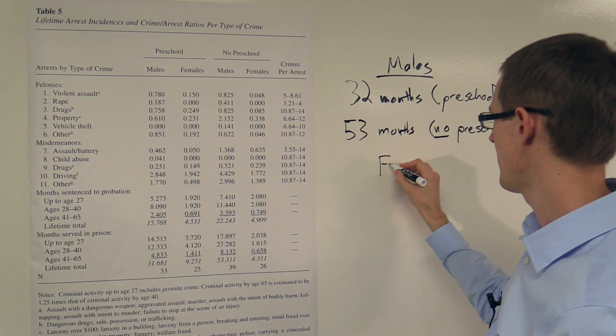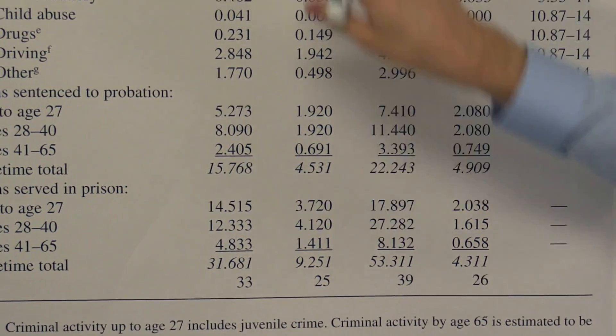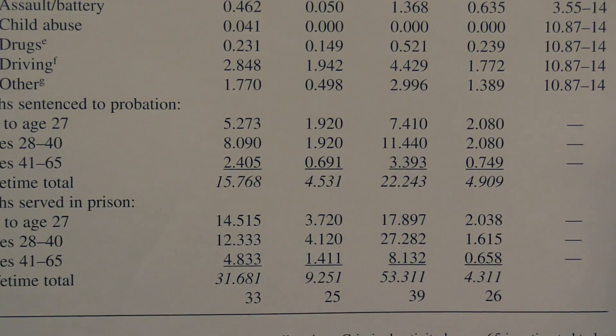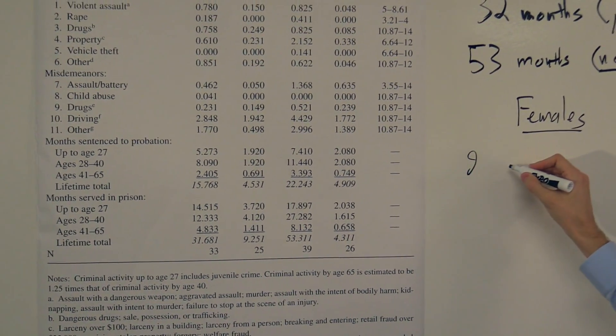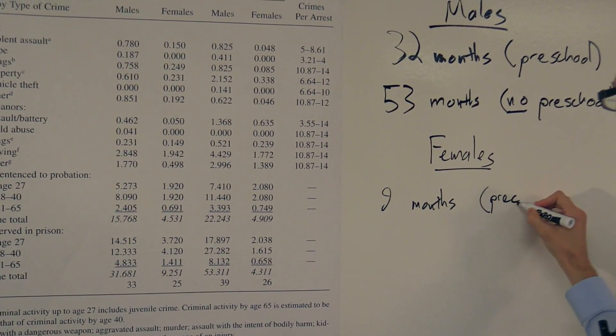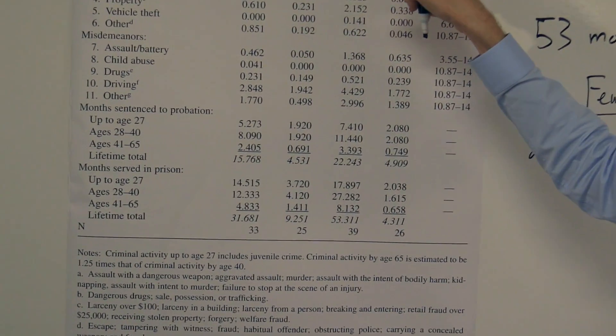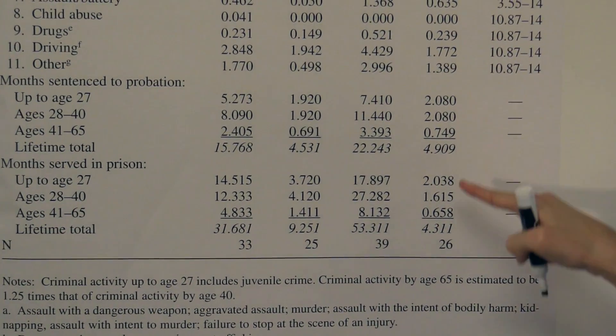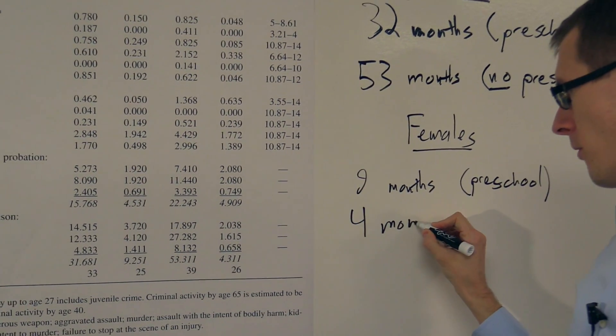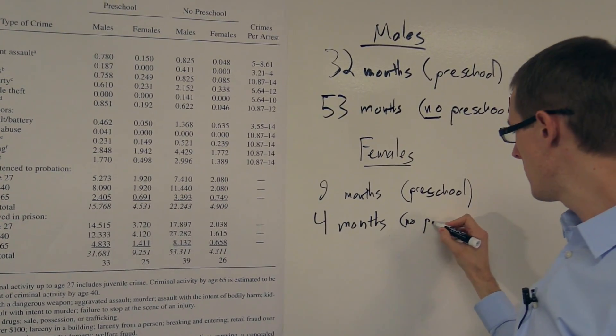Okay, let's look at females. Females who went to preschool got an average of 9.2 months in prison, so about nine months, and that's with preschool. Compare that to females who didn't get preschool. They got 4.3 months, so about four months, and that's no preschool.